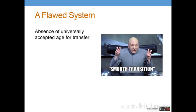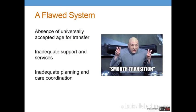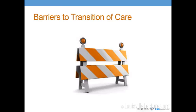Additional flaws include inadequate support and services, inadequate planning and coordination — it's not just the provider, it's a lot of ancillary support as well. There are also gaps in health insurance; most patients can't articulate what their insurance plan is or what will happen once they're no longer covered under their parents. Overall, a lack of knowledge of this process creates potentially serious health-related consequences: patient disengagement, poor treatment adherence, increased hospitalization, and overall poor health outcomes.